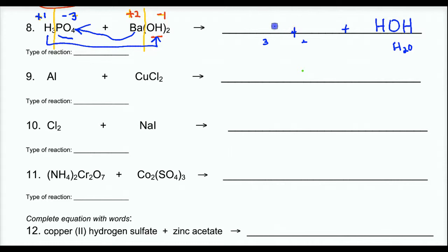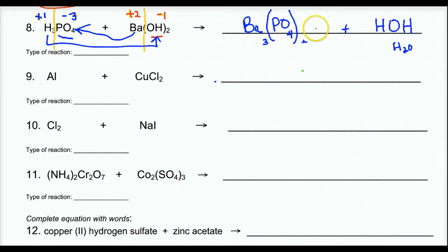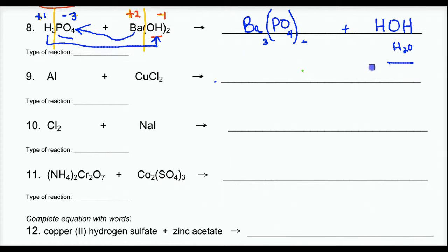I'm going to crisscross this and I need 3 bariums for every 2 phosphates. Get rid of my charges — put them away. To show 2 phosphates, you need the parentheses. Notice we need 3 barium ions that are plus 2 apiece to hook up with 2 phosphates that are negative 3 apiece, so that each chemical formula is electrically neutral. That's what we do when we do formula writing.